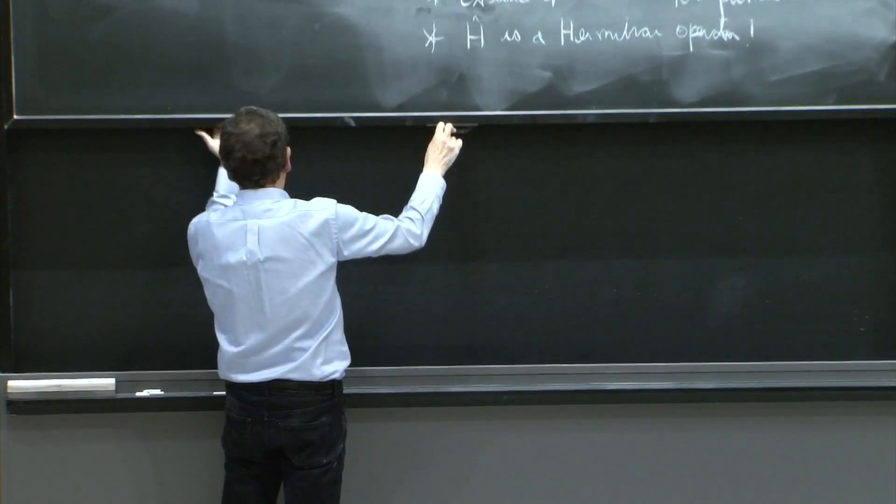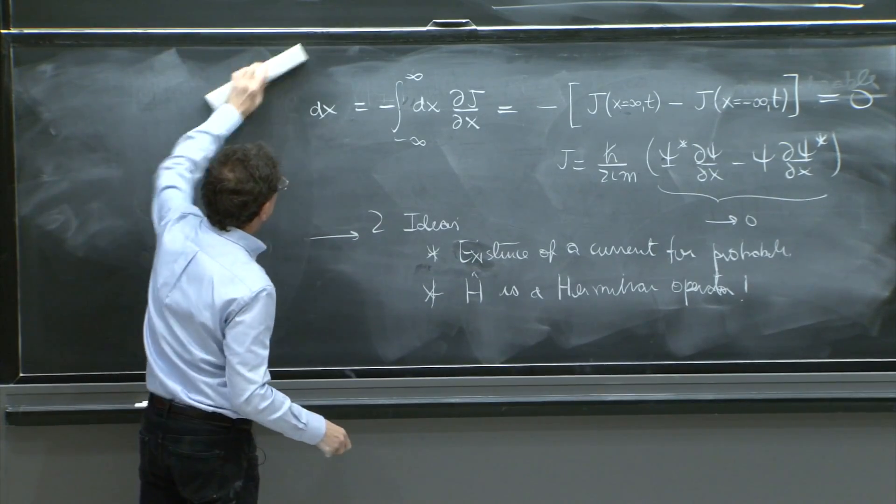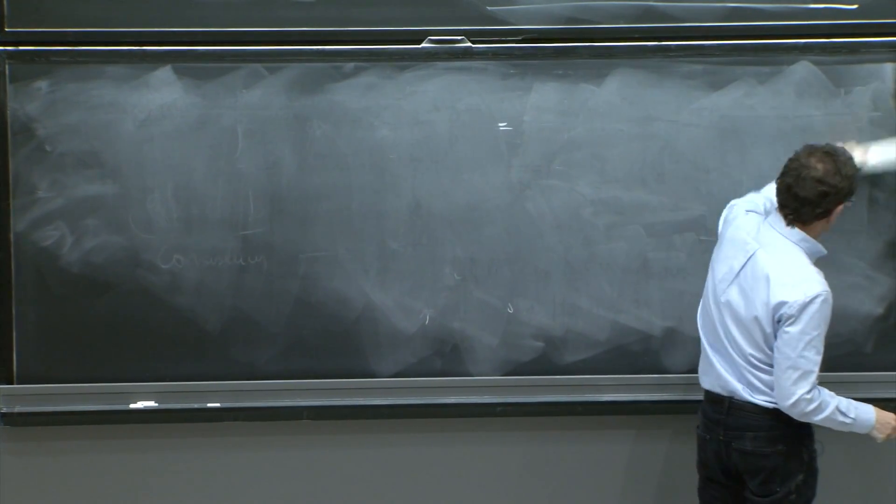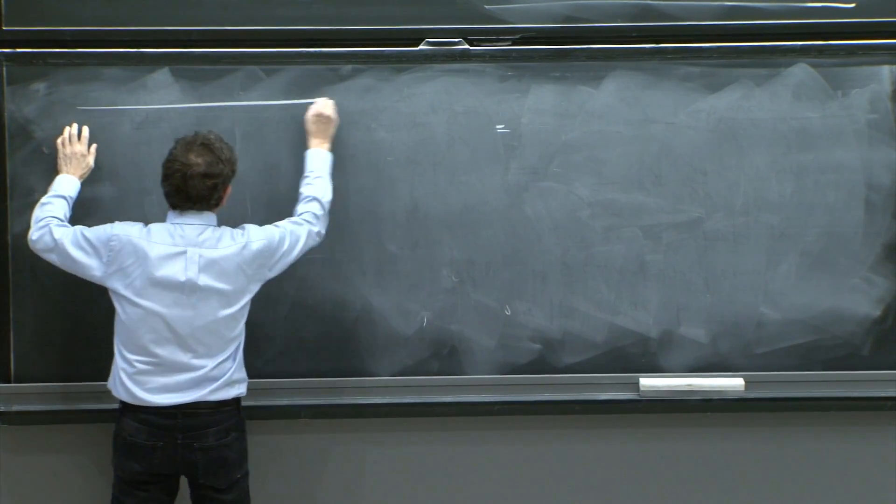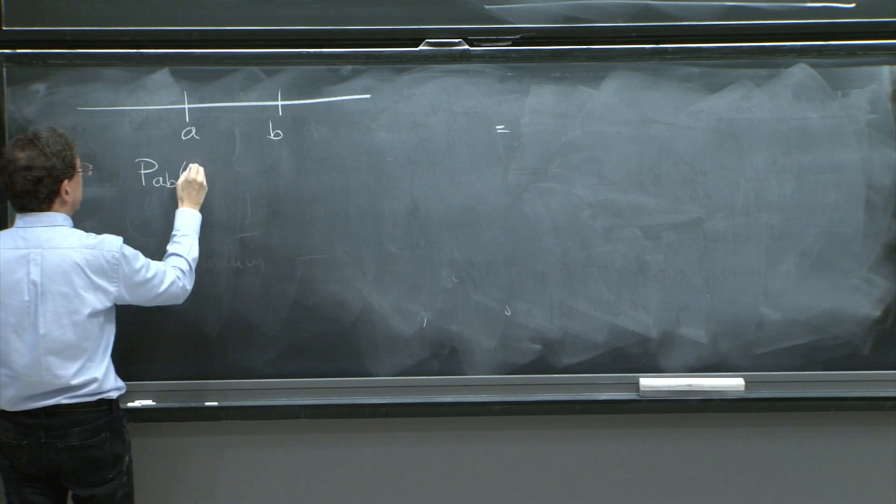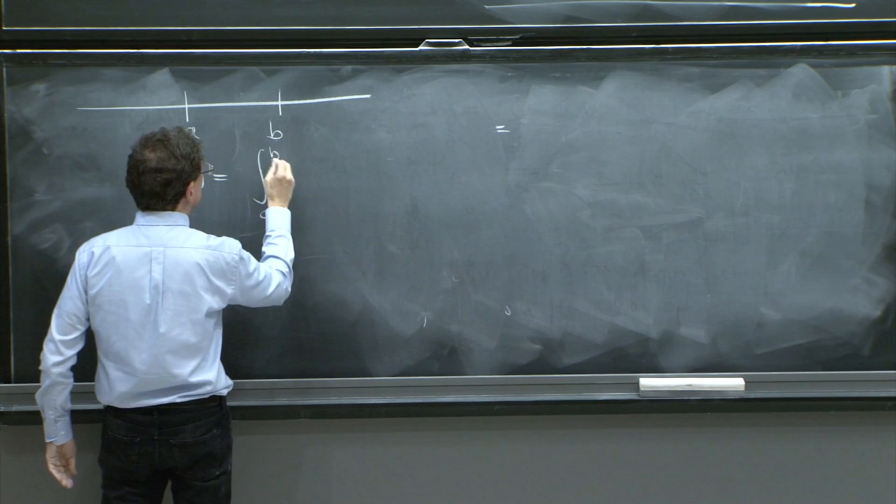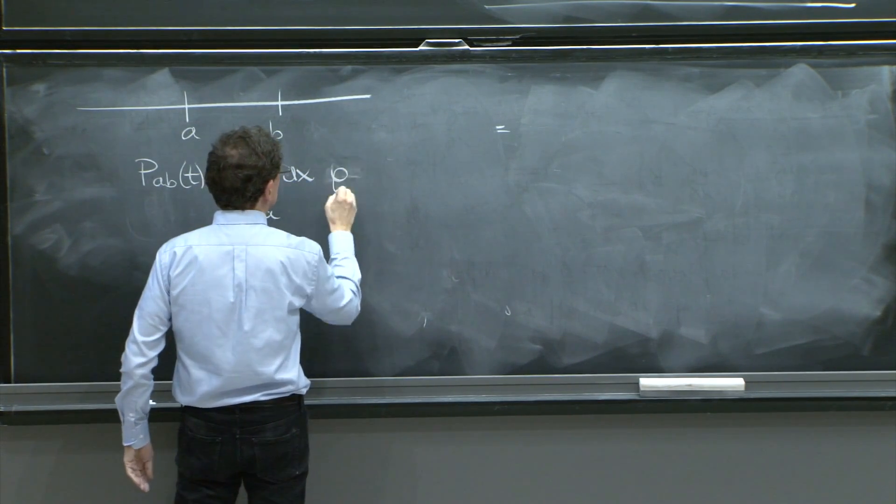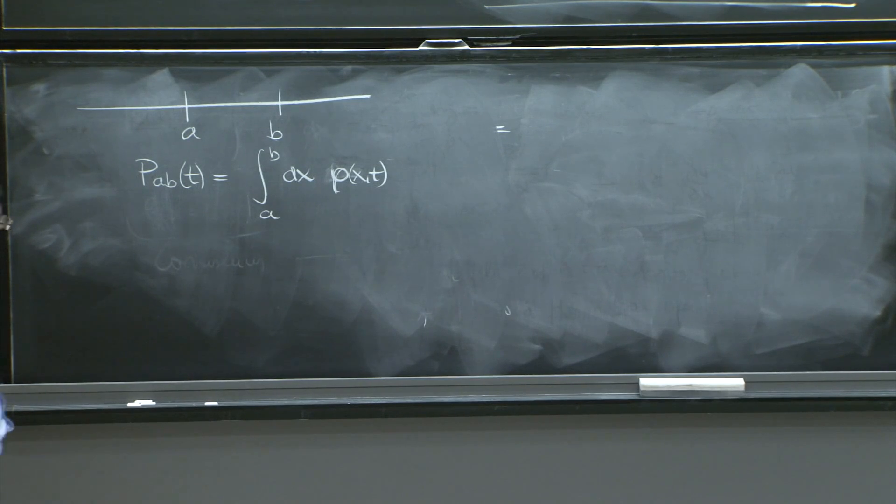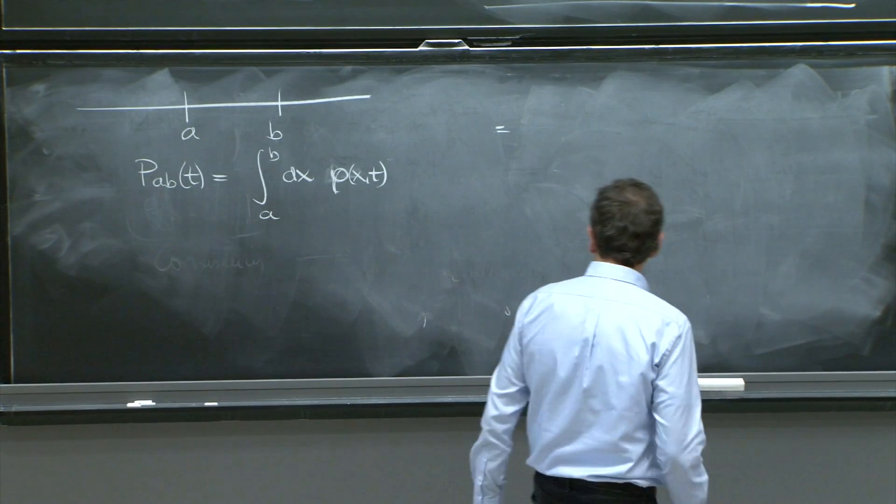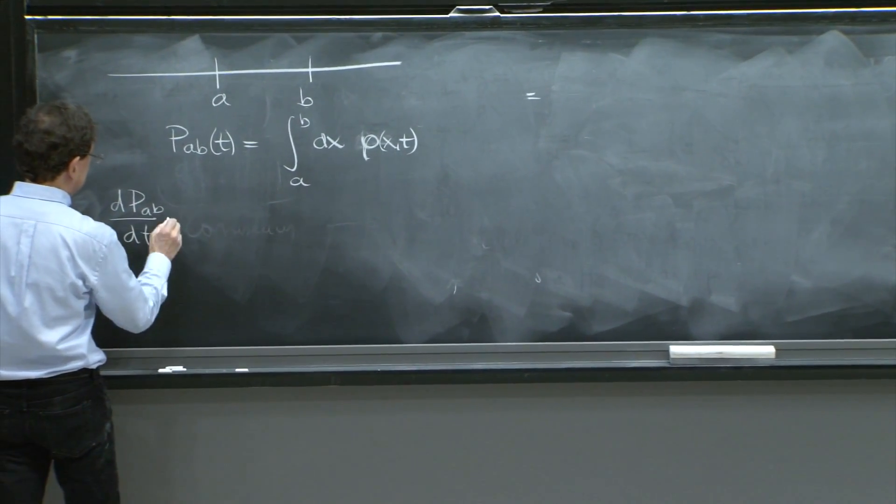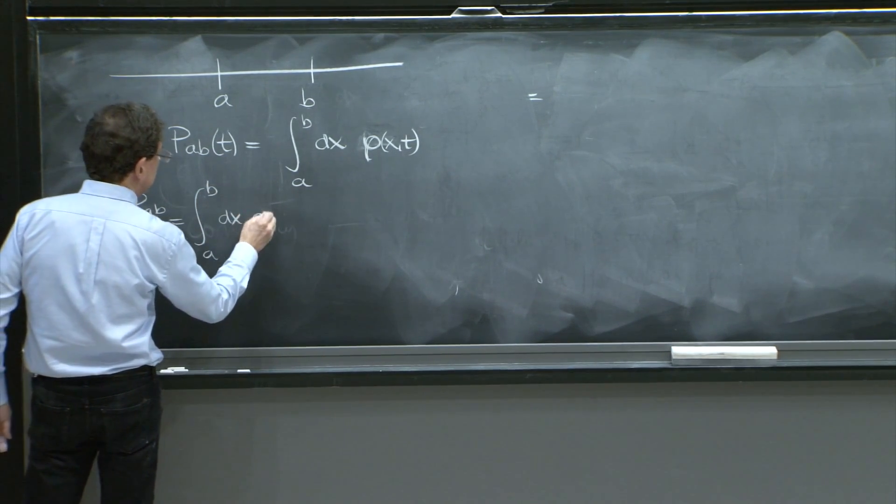So the same thing happens for the probability. Now, let me close up with the statement in one dimension, which is the one you care, at this moment more, at least. And on the line, you would have points a and b. And you would say, the probability to be within a and b is the integral from a to b dx of rho. So that's your probability.